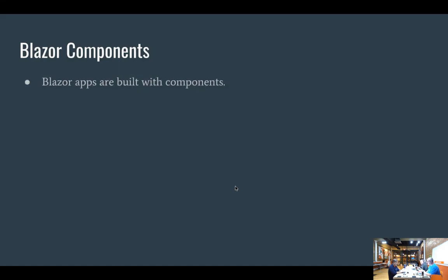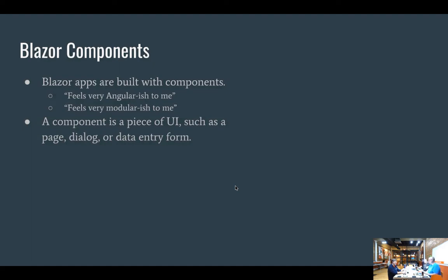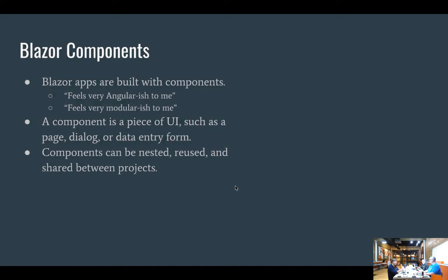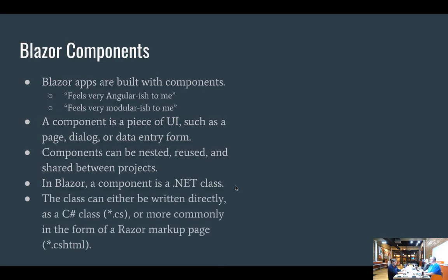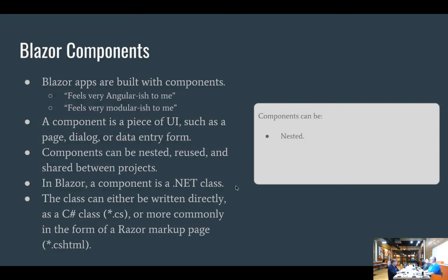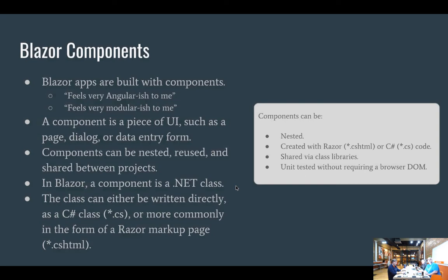Blazor apps are built with components. As we go through this you may have the same feelings I did — it feels very Angular-ish, and also kind of modular like a DNN module. A component is a piece of UI such as a page, dialog, or data entry form. Components can be nested, reused, and shared between projects. In Blazor, a component is a .NET class — either a .cs file or .cshtml. Components can be created with Razor or C#, shared via class libraries, and unit tested without requiring a browser DOM.